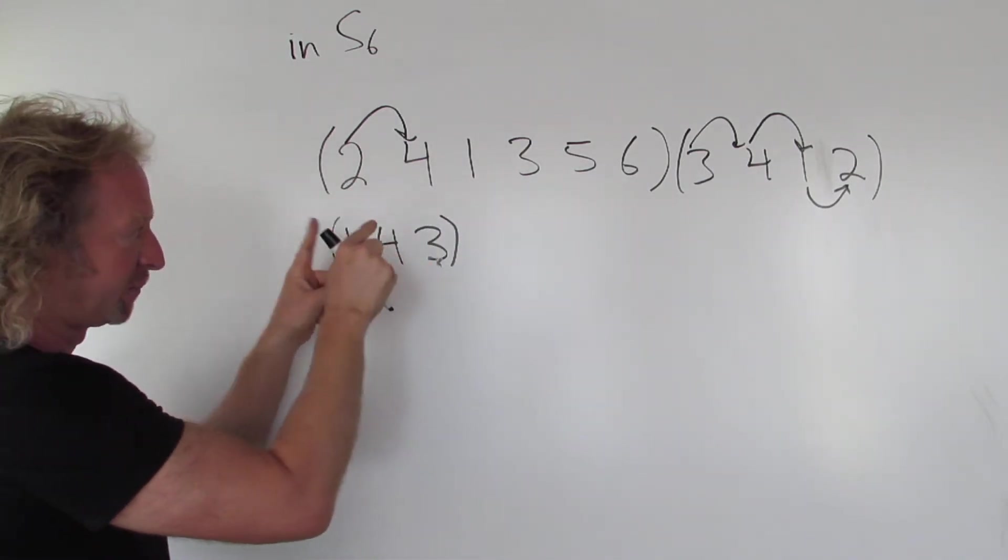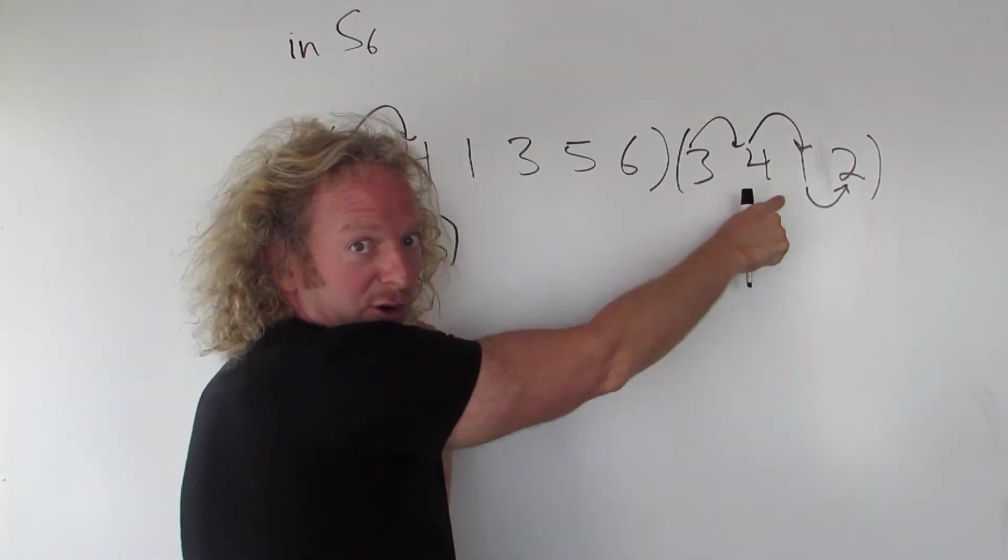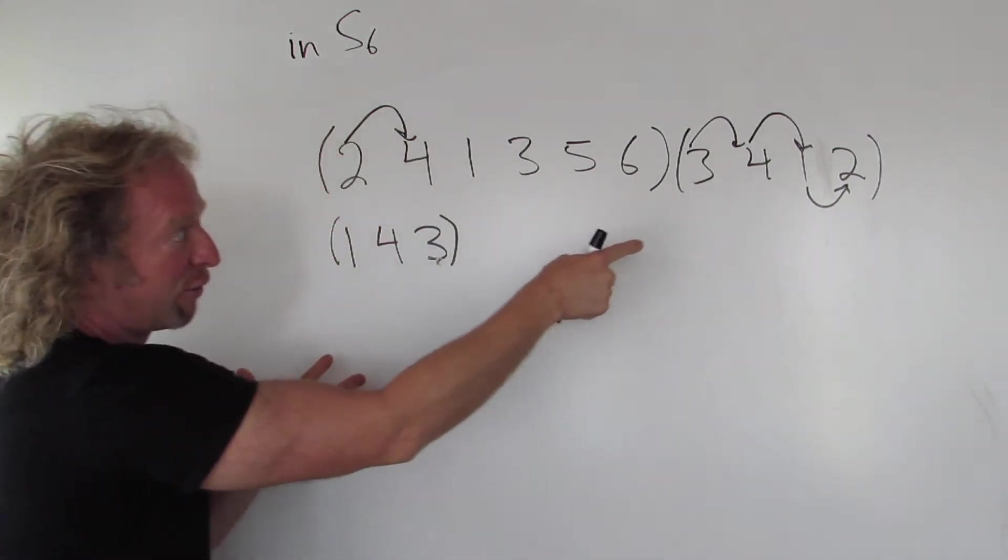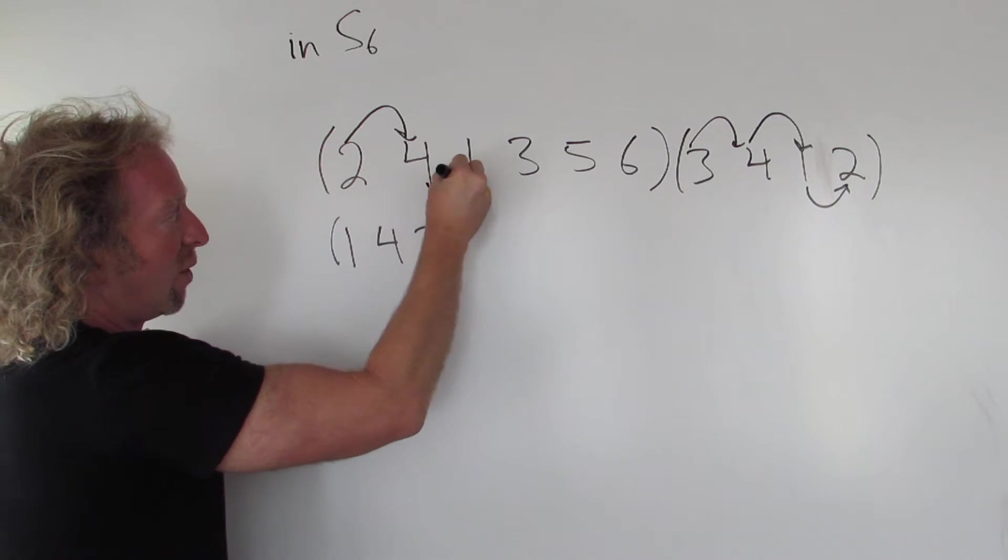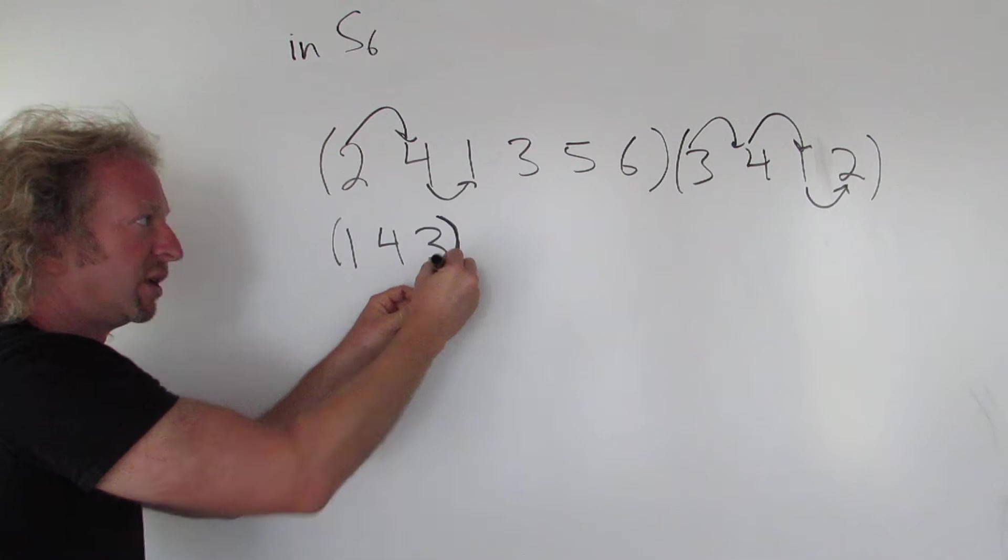So again, we did three. Three goes to four. Then you look for the four. Four goes to one. So that means that three goes to one, but the one's here, so you close it.